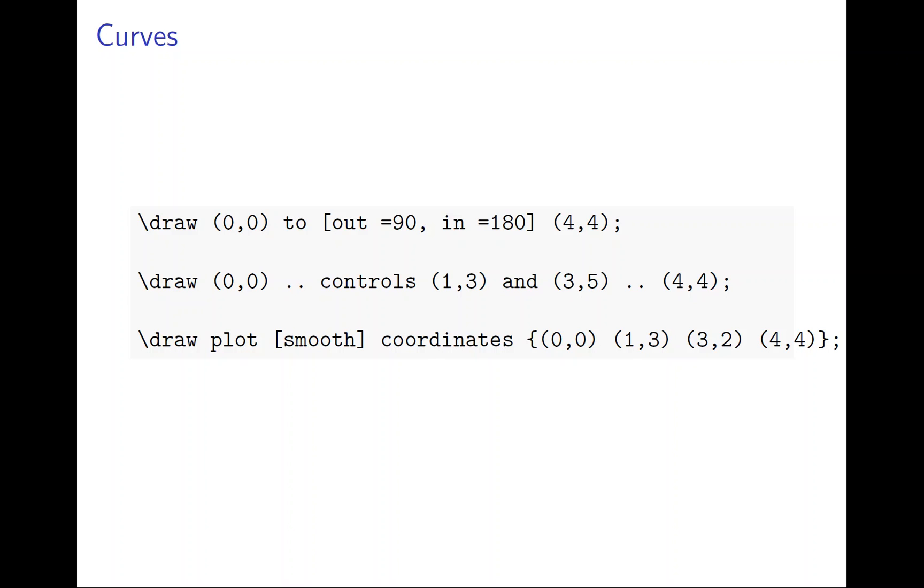But basically you have two points. And you have two control points. And basically it's a parabolic function that drawing from 0,0 to 4,4. But with these two particular control, I'm not going to explain what it is because it's rather complicated. But I will show you how you can draw it.